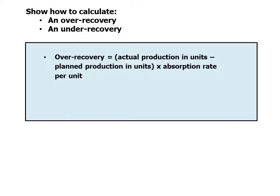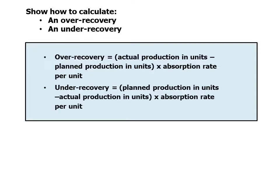Show how to calculate an over-recovery and an under-recovery. An over-recovery is: actual production in units minus planned production in units during the period, times the absorption rate per unit. The under-recovery is: planned production in units minus actual production in units, times the absorption rate per unit.